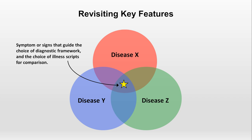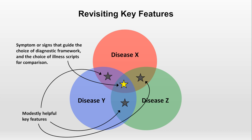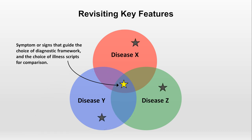Since the diseases were all pulled from the diagnostic framework for whatever element is represented by the star, the star must necessarily fall where all three sets in the Venn diagram intersect. If we consider that a key feature is something which, by definition, helps to distinguish diagnostic possibilities, a symptom, sign, or other element present in all three diseases under consideration would not be diagnostically helpful — it would not be a key feature at all. An element present in two diseases would be modestly helpful, since it would help to reduce the probability of one disease. But elements present in only one of the diseases under consideration are the most helpful.